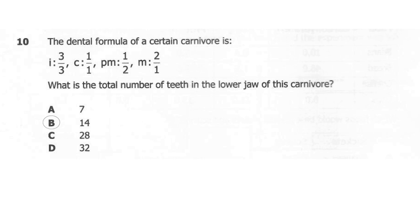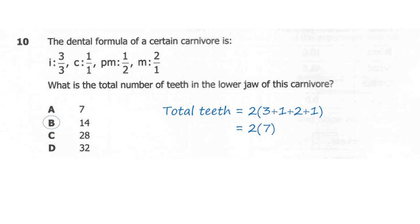The correct answer here is B, 14. To find 14, the total number of teeth equals the teeth on the lower jaw multiplied by 2. In the lower jaw we have 3 incisors, 1 canine, 2 premolars, and 1 molar. We add them — that gives us 7 — then multiply by 2: 7 times 2 equals 14. Whenever dealing with a dental formula to find the total number of teeth, we always multiply by 2.